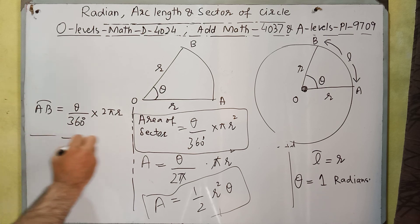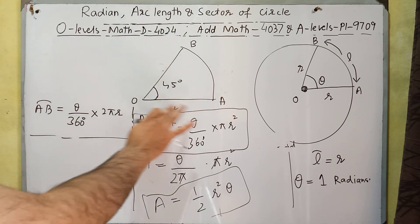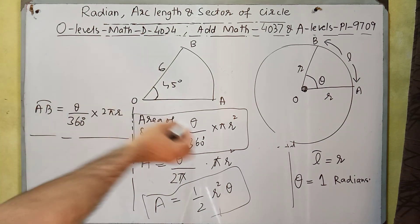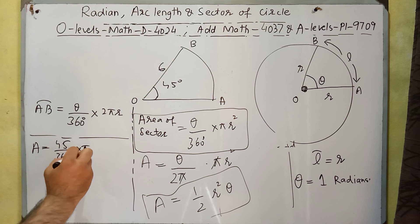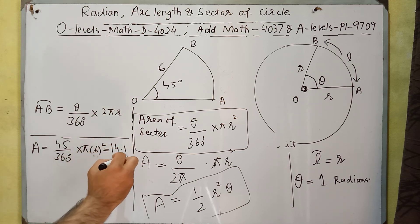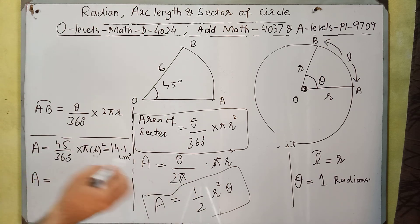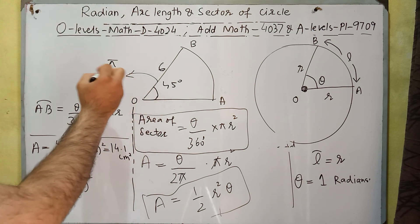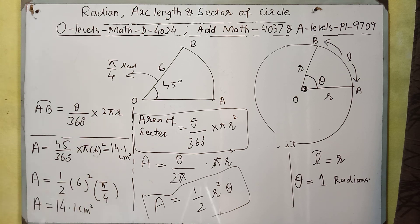For example, suppose the angle is 45 degrees and radius is 6 cm. Using the degrees formula: area equals 45 over 360 times π times 6 squared, which gives 14.1 cm squared. Using the radians formula: area equals one-half times 6 squared times pi over 4, since 45 degrees equals π/4 radians. This also gives 14.1 cm squared, confirming both formulas give the same answer.